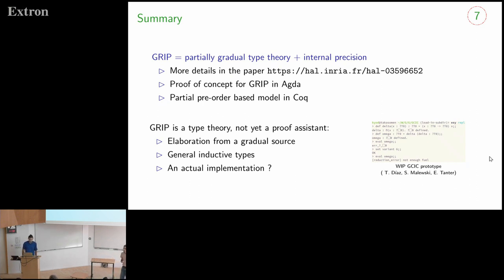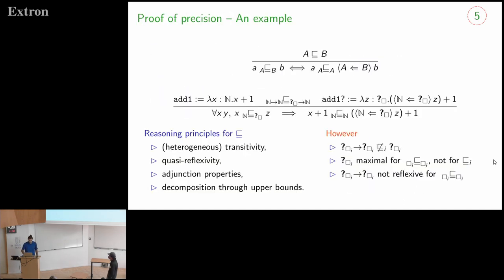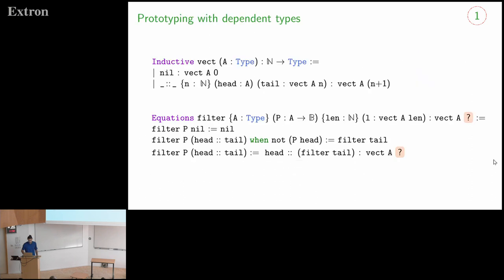Thank you. Sorry, can you go to the first example with the vectors? Yep. Here we are. Right, so the naive approach that I would maybe go for is to define the output type as a sigma, to say that there exists a natural number such that we have a vector of that length. What's the advantage of gradual typing compared to this more naive approach?